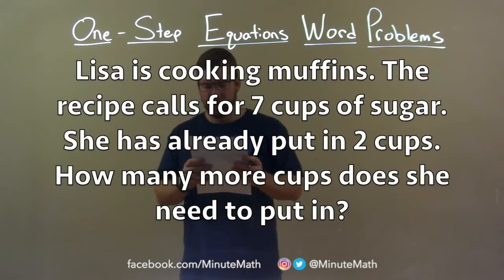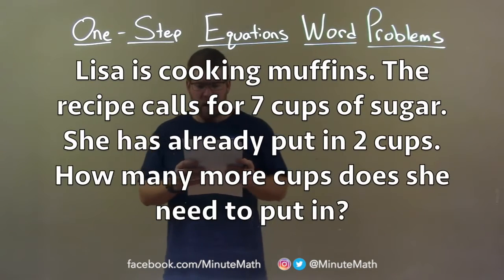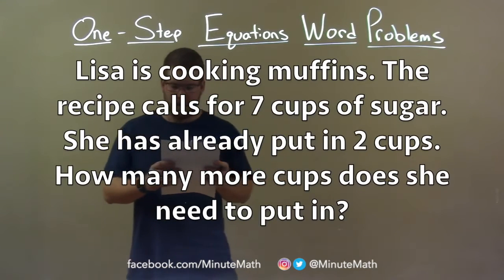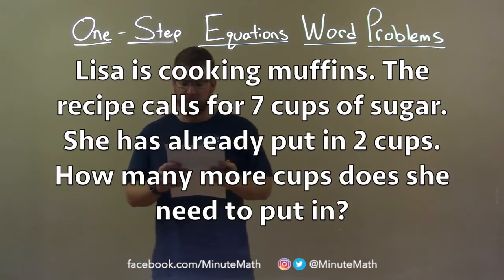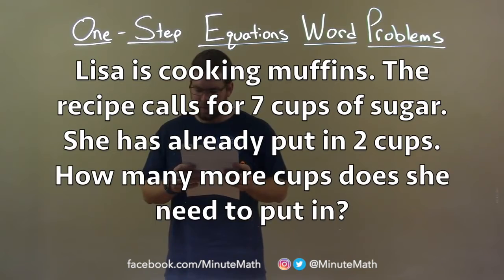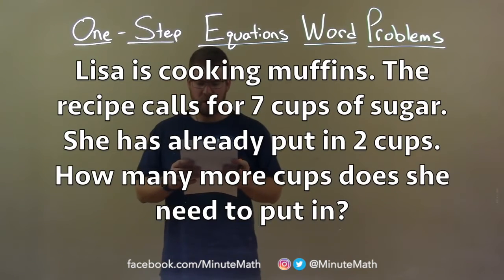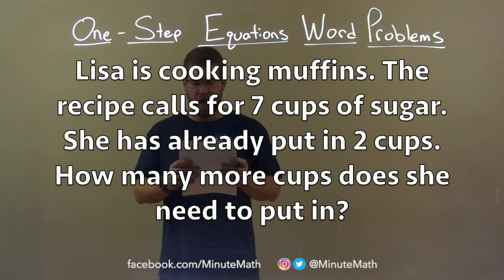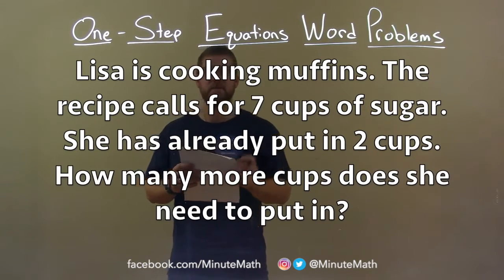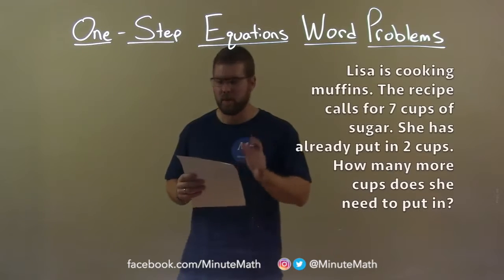Lisa is cooking muffins. The recipe calls for seven cups of sugar. She has already put in two cups. How many more cups does she need to put in?